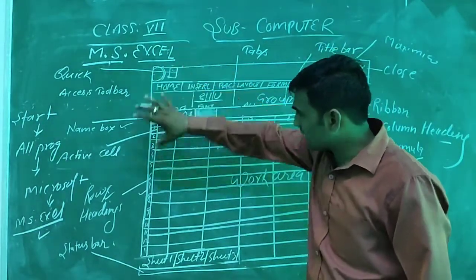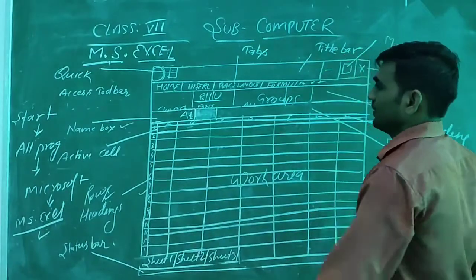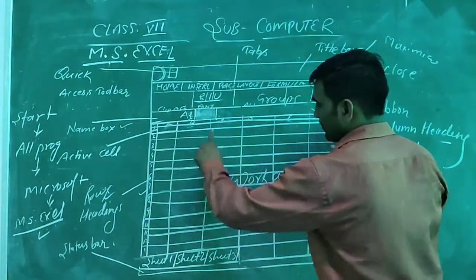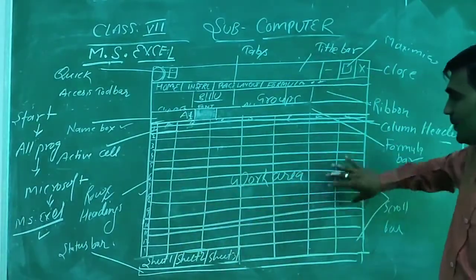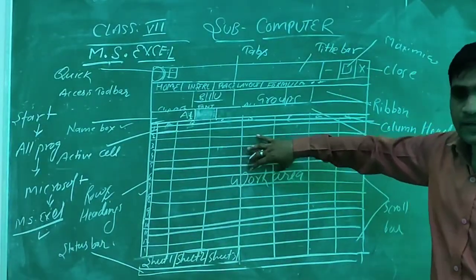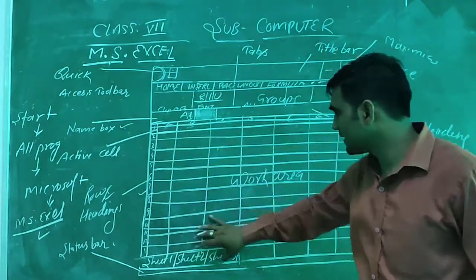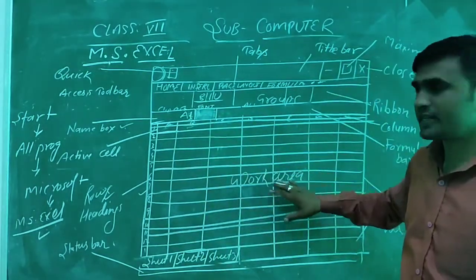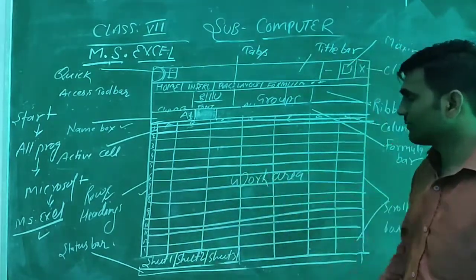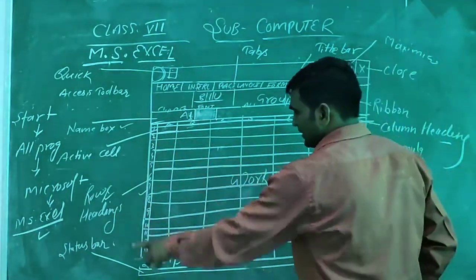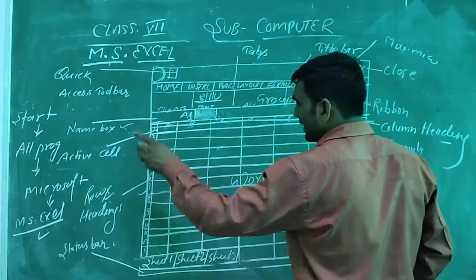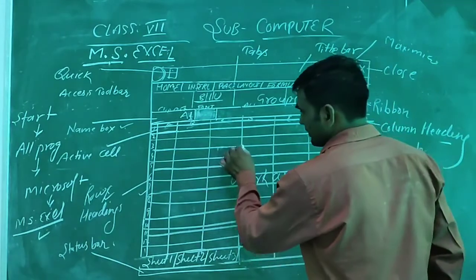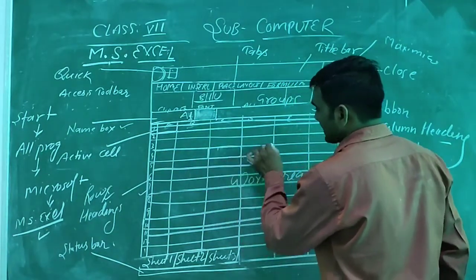The centre part of the window contains rows and columns, and in that area there are many small rectangles.